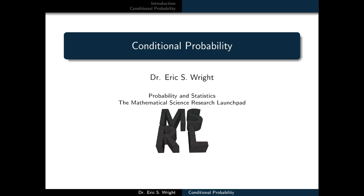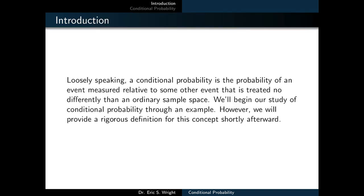Welcome to Conditional Probability, a video lesson for Probability and Statistics. Loosely speaking, a conditional probability is the probability of an event measured relative to some other event that is treated no differently than a sample space. We will begin our study of conditional probability through an example, but we'll provide a rigorous definition for this concept shortly afterward.